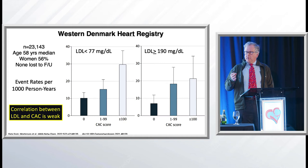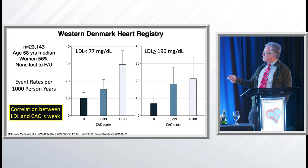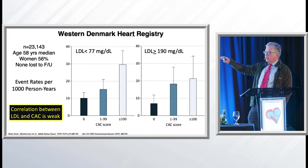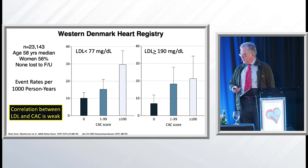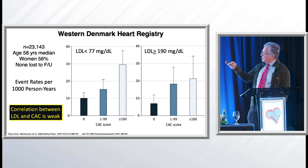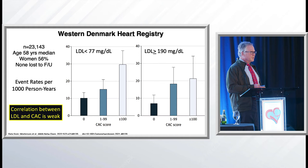It's not just about LDL. From the Western Denmark Heart Registry with 23,000 patients, they looked at LDL from less than 77 to over 190 and plotted event rates for acute coronary syndromes. A calcium score differentiated event rates — the more calcium, the greater the event rates. Importantly, event rates in the low LDL group (less than 77) and the high LDL group (over 190) weren't really different. This tells us either LDL doesn't matter — which I don't believe — or that an LDL of 77 is still too high, which I think is true.